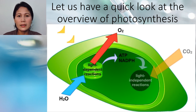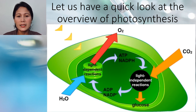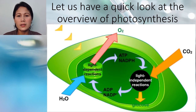ATP and NADPH, together with carbon dioxide, are reactants in the light-independent reactions. The products are sugars, ADP, and inorganic phosphate. The light-dependent and the light-independent reactions thus form a cycle in which the net inputs are water and carbon dioxide and the net outputs are oxygen and carbohydrates.